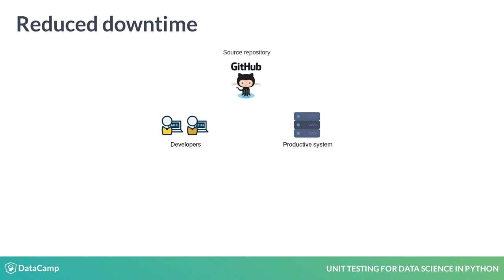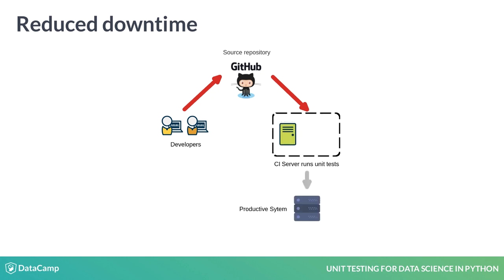Unit tests can also reduce downtime for a productive system. Suppose we make a mistake and push bad code to a productive system — this will bring the system down and annoy users. We can cure this by setting up continuous integration, or CI. CI runs all unit tests when any code is pushed, and if any unit test fails, it rejects the change, preventing downtime. It also informs us that the code needs to be fixed. If we run productive systems that many people depend on, we must write unit tests and set up CI.